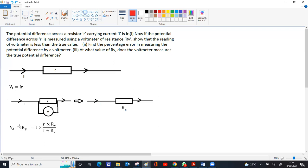Now we have to show v2 is less than v1. So divide v2 by v1. Here we have i times r terms that cancel out, leaving rv divided by r plus rv.